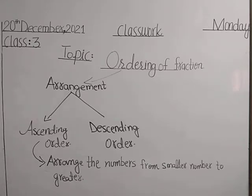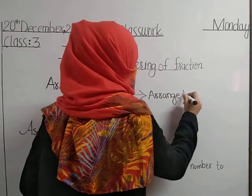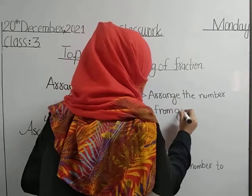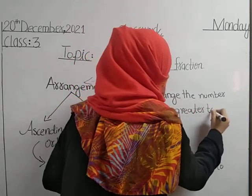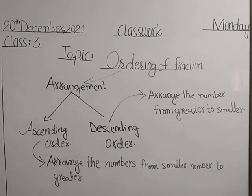So what is descending order? You tell me what is descending order. Descending order means arrange the number from greater to smaller. So ascending order is arrange the number from smaller to greater, and descending order means arrange the number from greater to smaller.